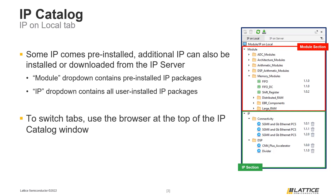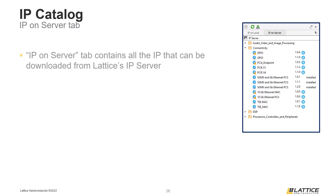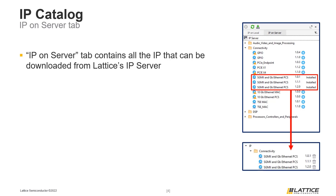To switch to the IP on Server tab of the IP Catalog, select it from the top of the window, as can be seen in the figure on the slide. The background of the active IP Catalog tab will be bolded. The IP on Server tab contains all the IP available for download from Lattice's IP server. Any IP that is downloaded in this window will appear in the IP on Local tab. As can be seen from the figures on the slide, all three of the IP with 'installed' next to their name also appear in the IP on Local tab.